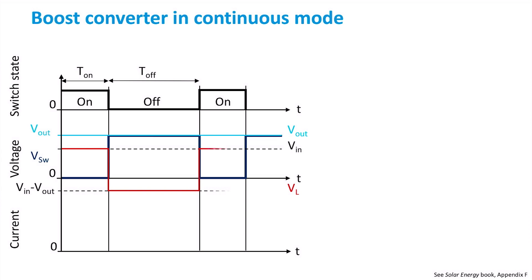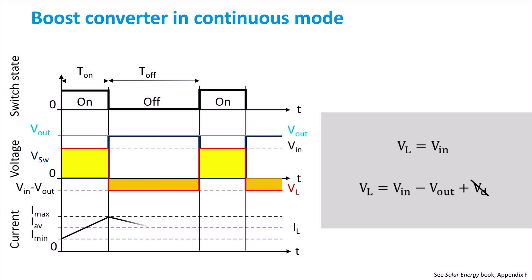The red signal represents the voltage across the inductor L. As we've seen, it goes from Vin during the ON period to a negative value equal to Vin minus Vout, meaning the polarity of the inductor is reversed. The last signal is the current, which oscillates between a maximum value reached when the switch opens and a minimum value when the switch closes, after which the inductor has partially discharged its energy.